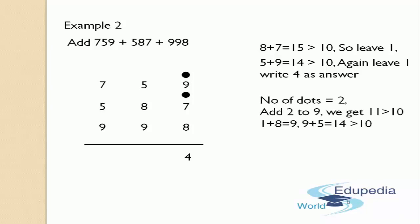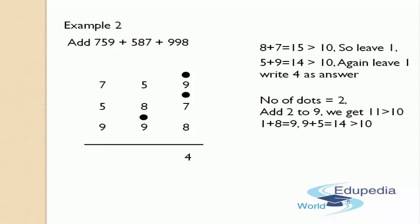This 11 is again greater than 10. So you have to leave 1 — instead of leaving 1, you have to place a dot on the top of the number, like this. After keeping the dot, the remaining is 1. Add this 1 to the next number, that is 8 — 1 plus 8 is 9. It is not greater than or equal to 10; it is just less than 10, so there is no problem for us to proceed the addition.